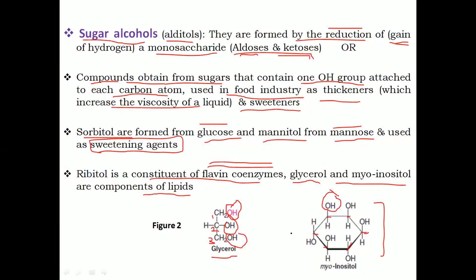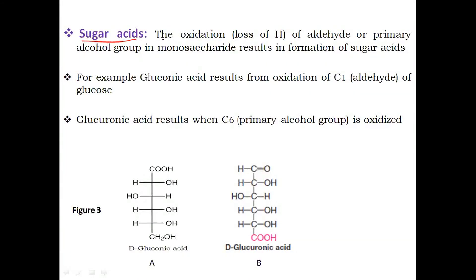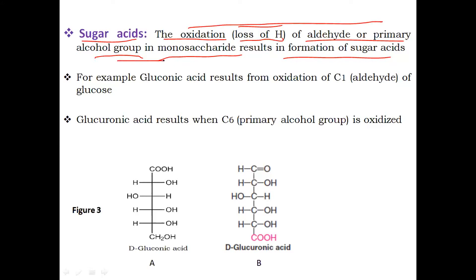The aldehyde group which was present at carbon 1 and at carbon 5 — due to the reduction process — changes, and an OH group is attached to each carbon. Next, sugar acids. Sugar acids are formed by oxidation, which is the reverse of reduction — here, loss of hydrogen occurs. The oxidation of an aldehyde or primary alcohol group in monosaccharides results in the formation of sugar acids.